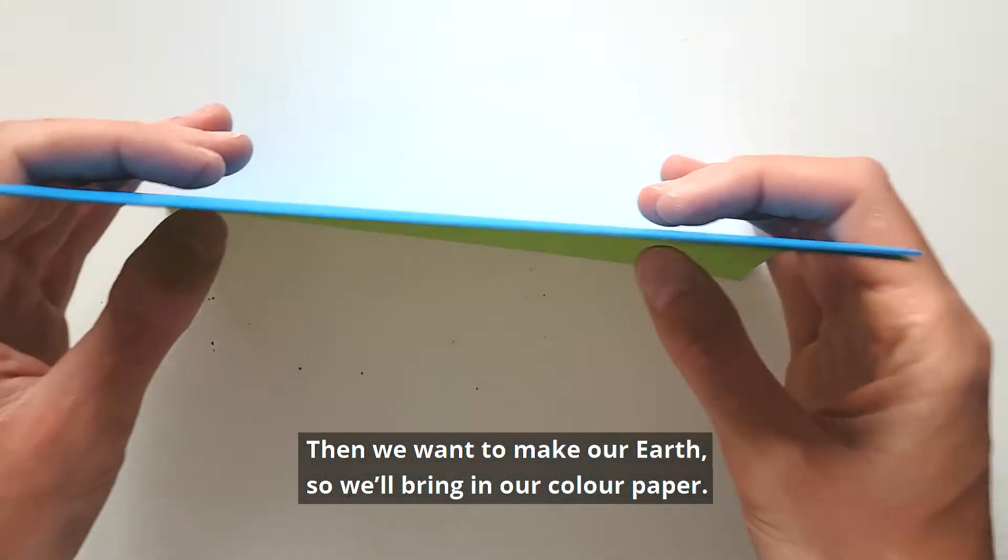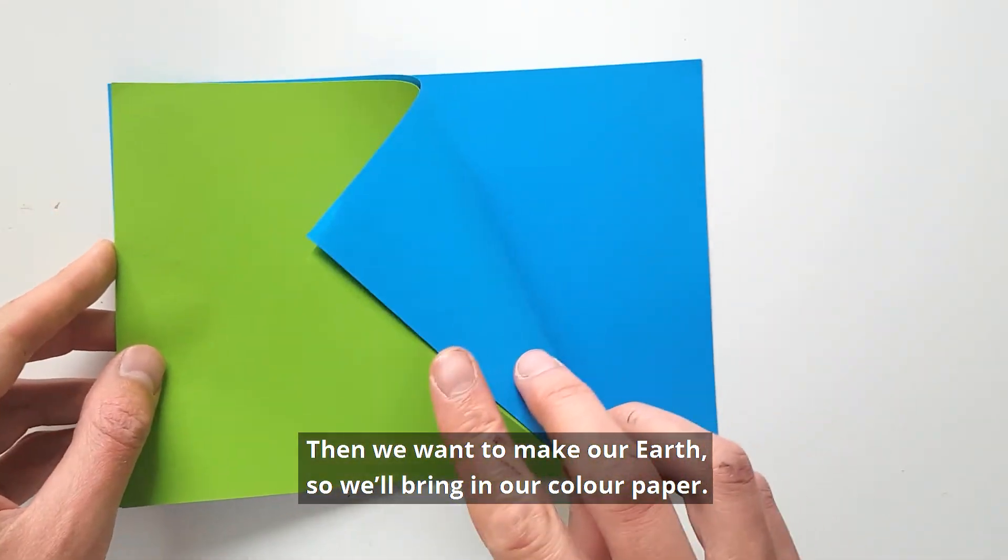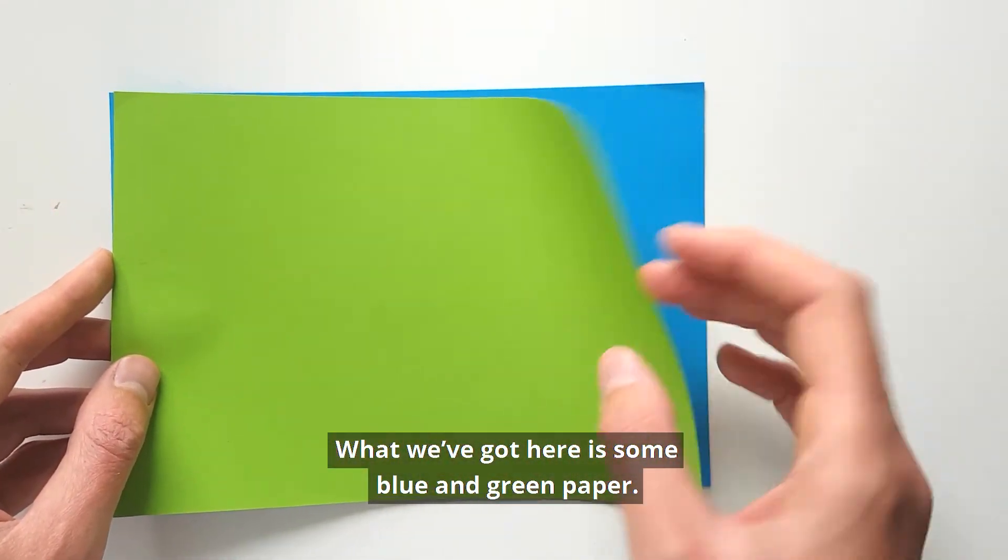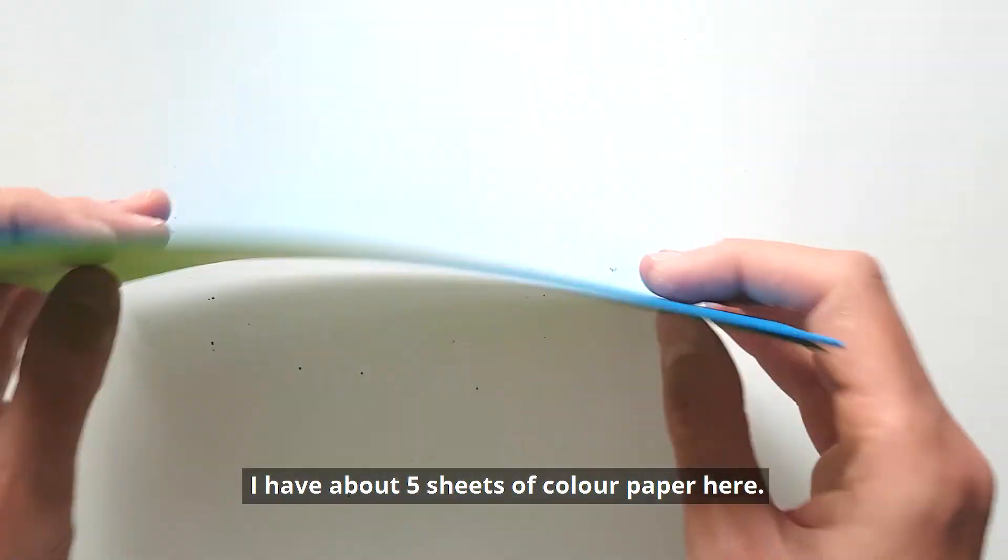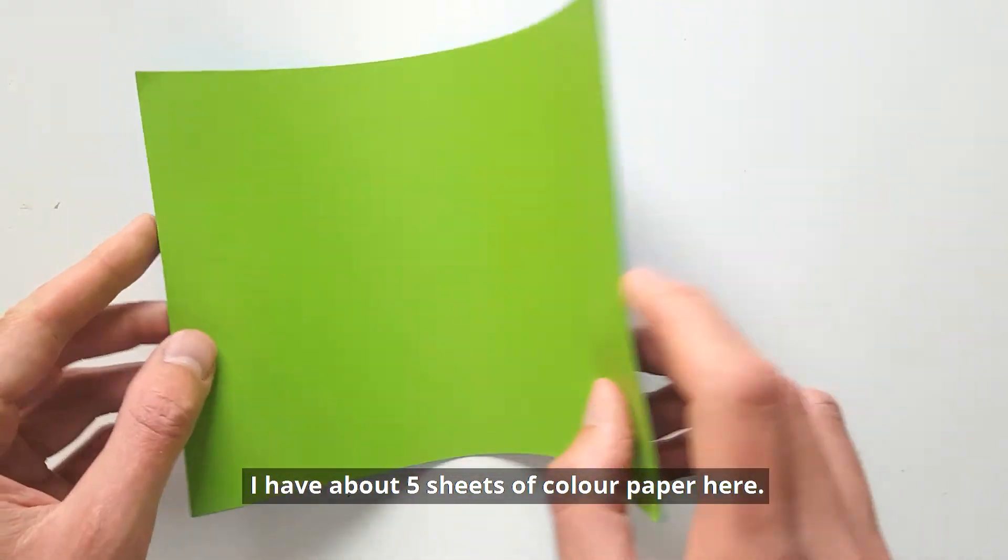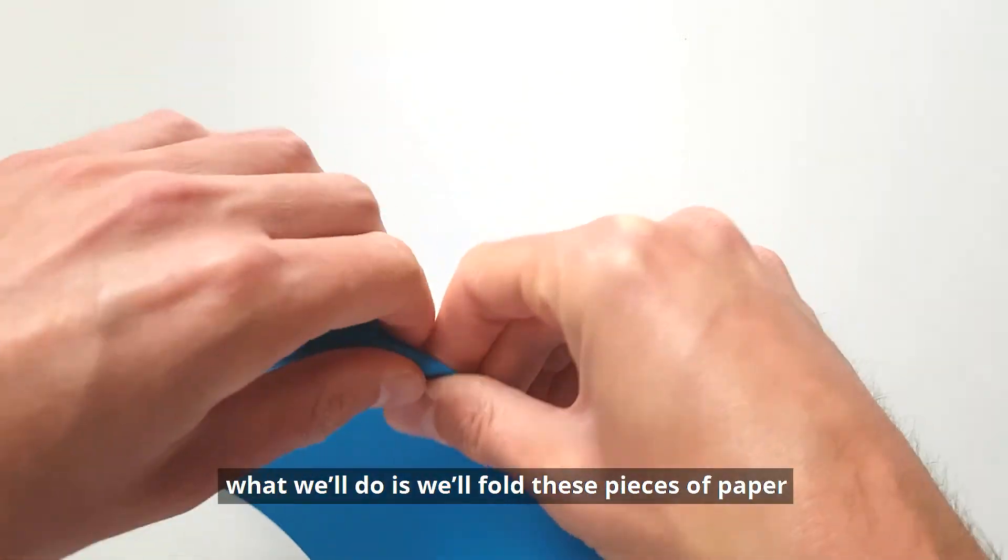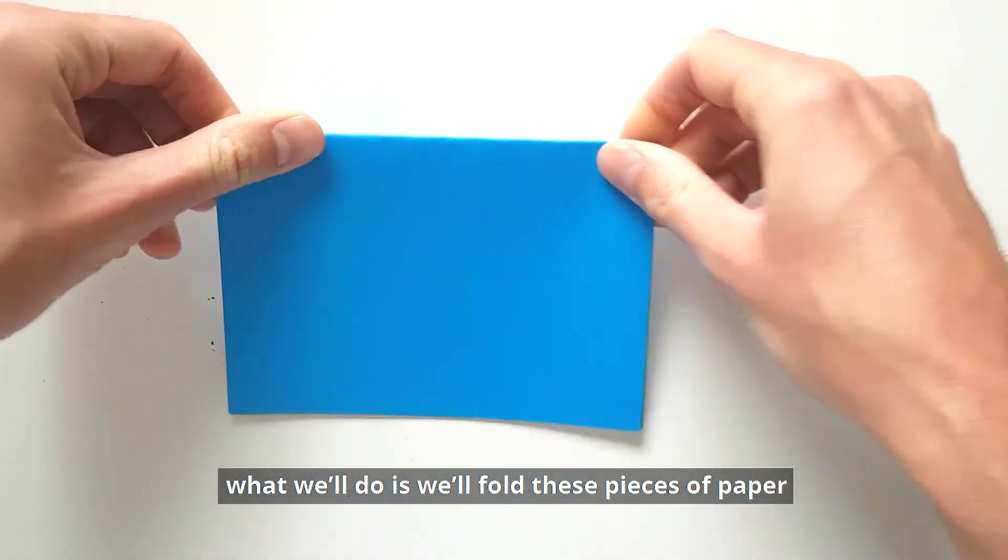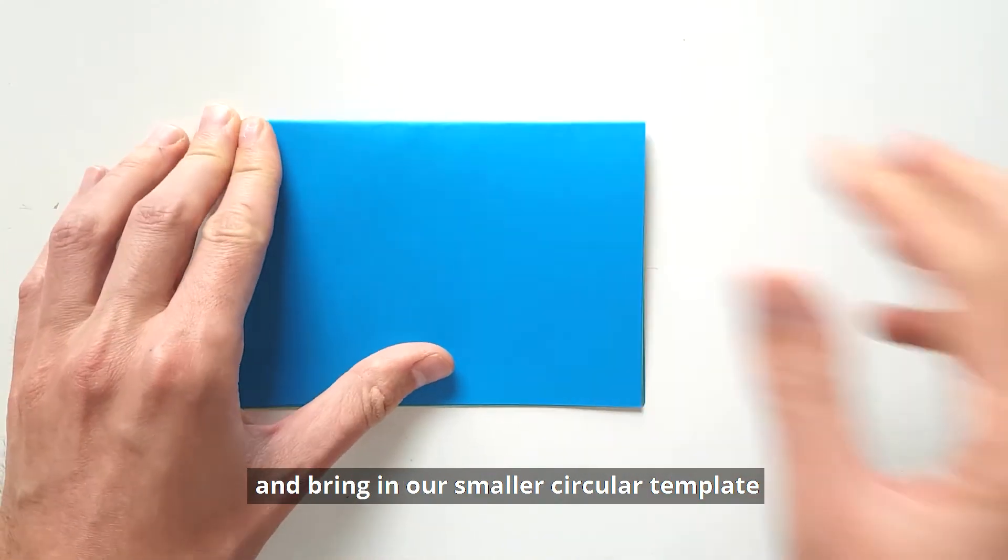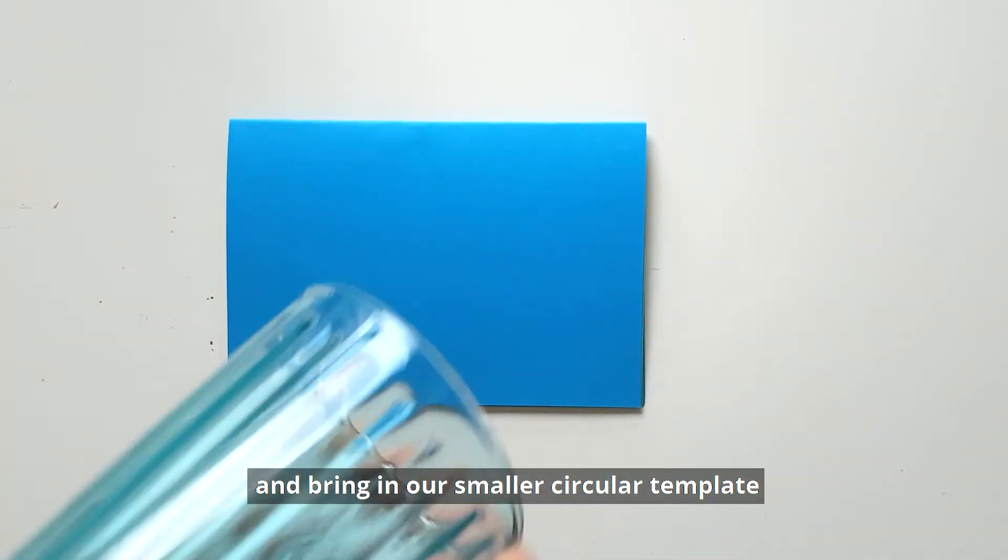Now we want to make our Earth. So we'll bring in our colored paper—blue and green. I have about five sheets of colored paper here. Now because the Earth is smaller than the Sun, we'll fold these pieces of paper and bring in our smaller circular template.